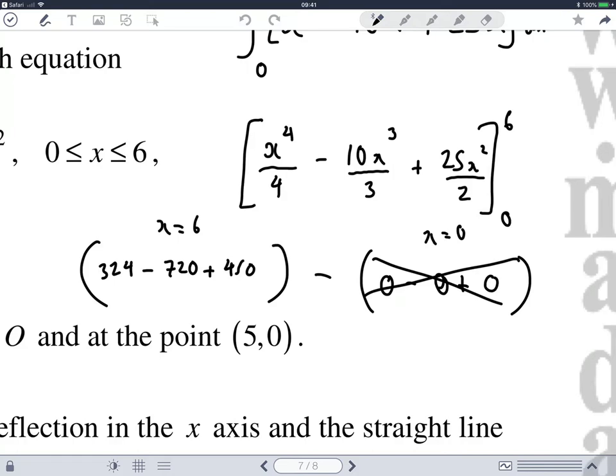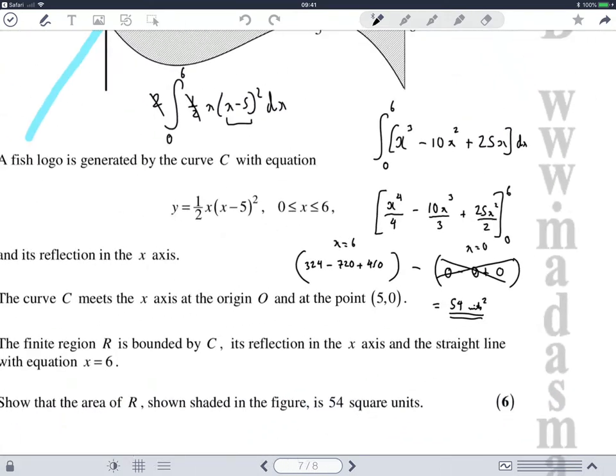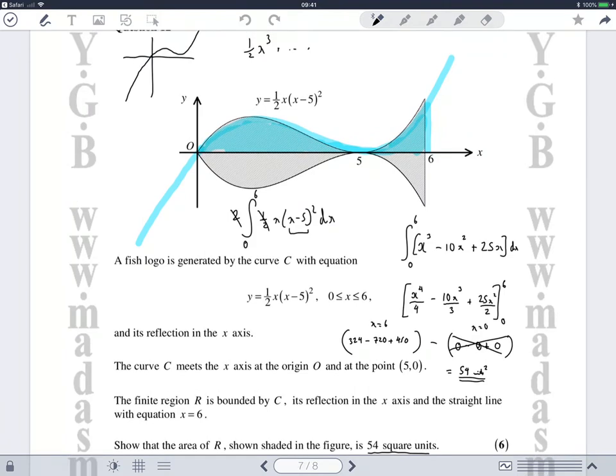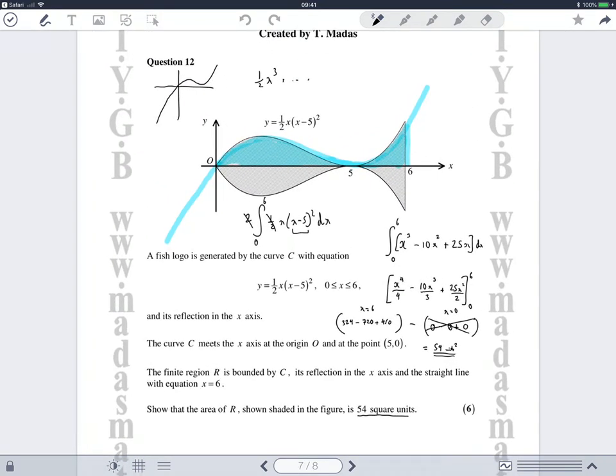So 324 plus 450 minus 720 will give the answer of 54 units squared, which is exactly what we wanted to see. 54 units squared, 54 square units. And there you go.